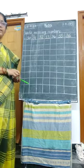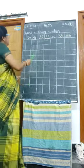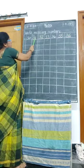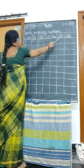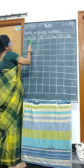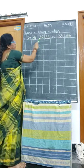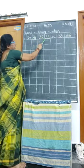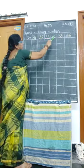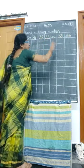Finish, my children. 30 missing numbers — 1, 2, 3, 4, 5 missing numbers. 30 after: 31, 32, 33, 34 — here is the end. After 34: 35, 36.